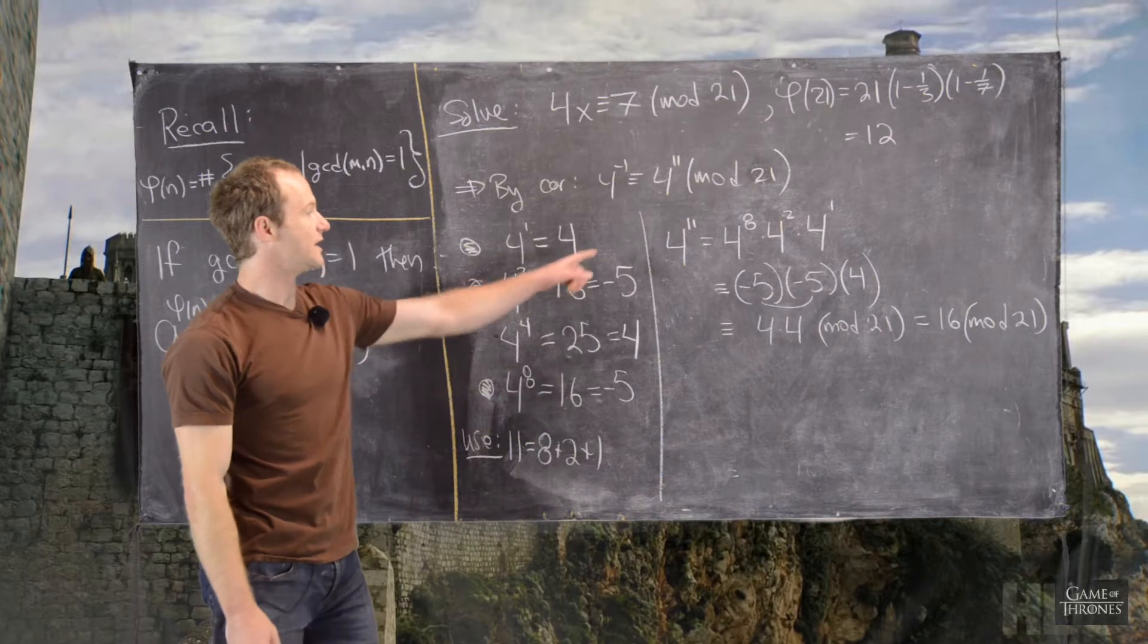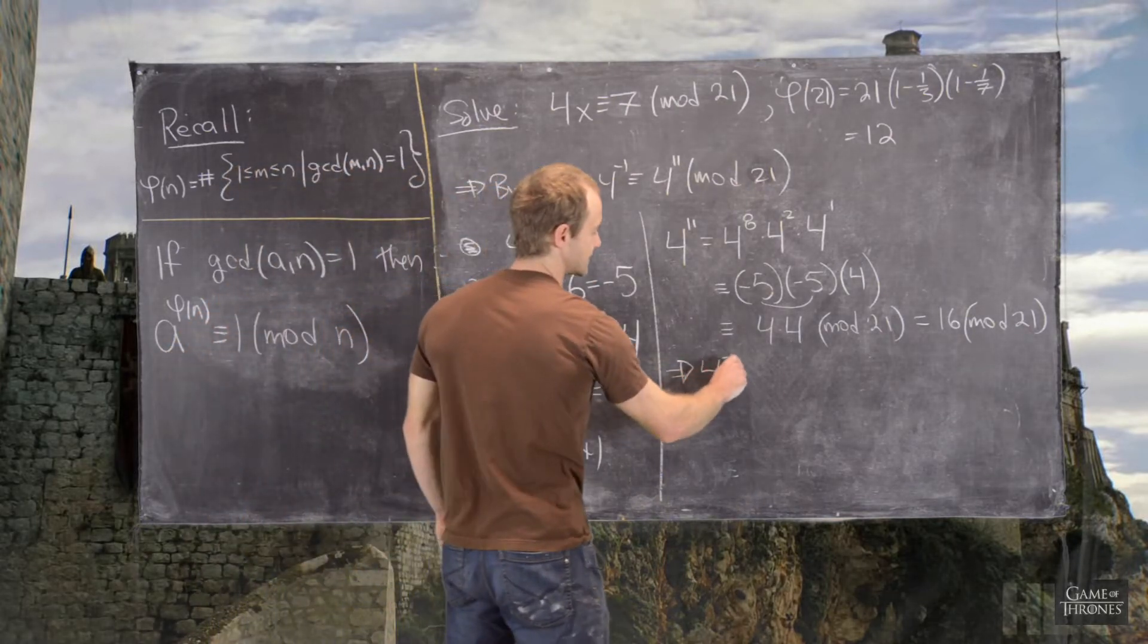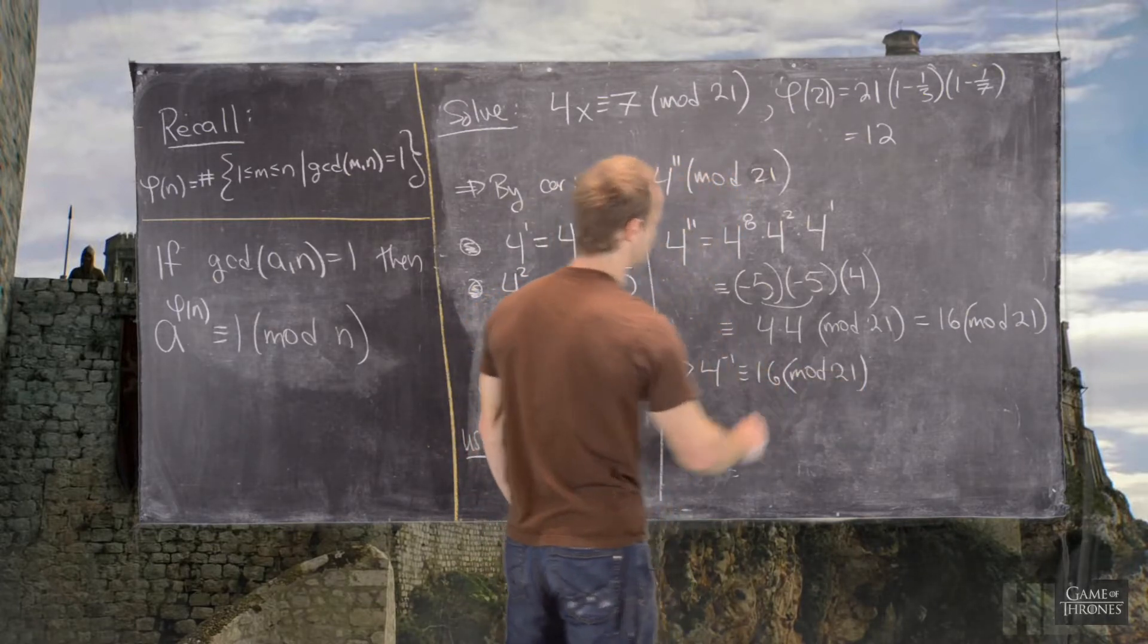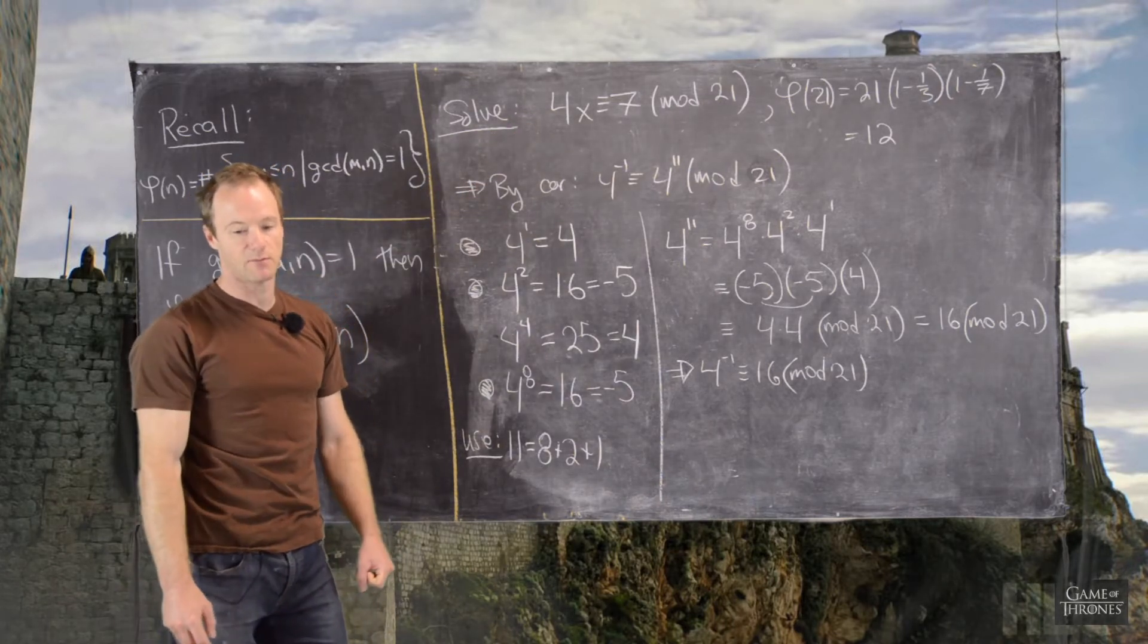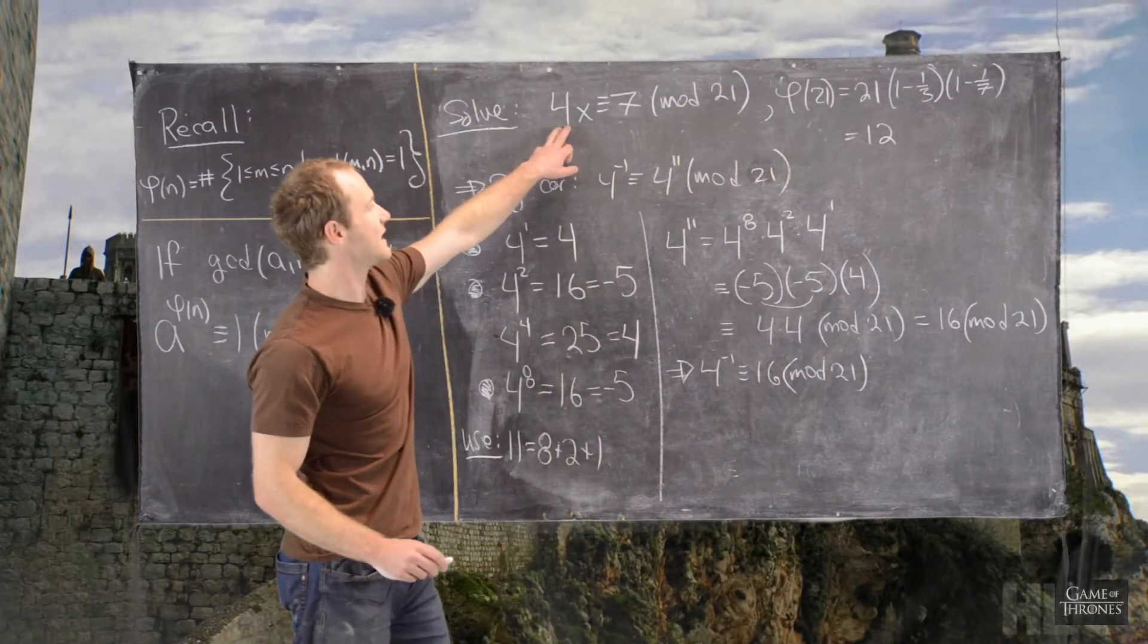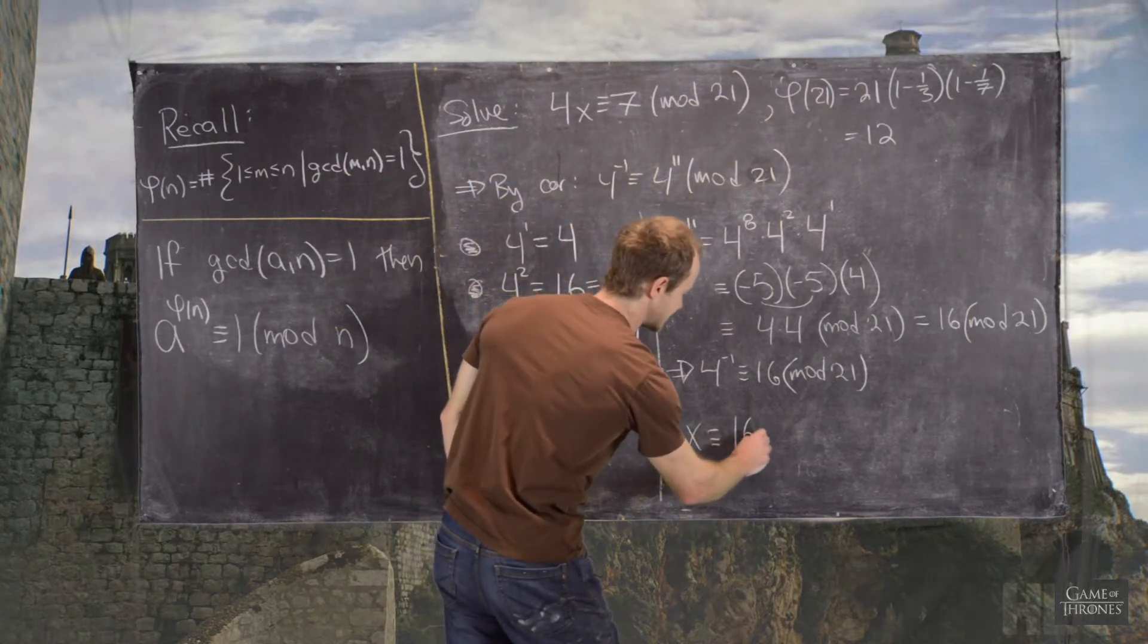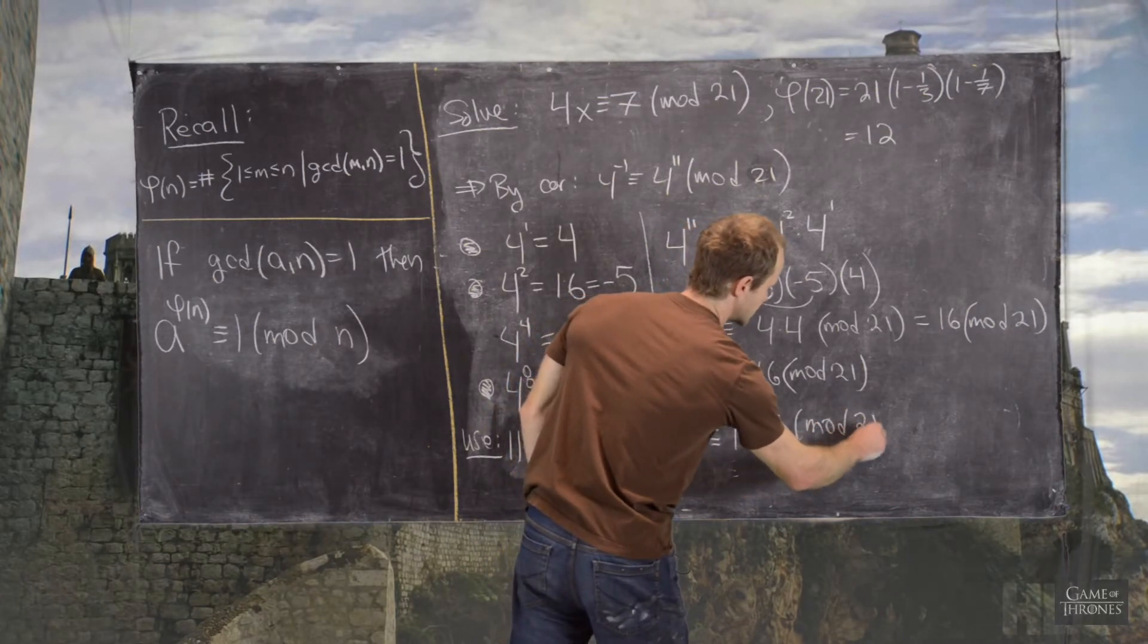Now, we know that that tells us that 4 inverse is congruent to 16 mod 21, which means we can take our original linear congruence and multiply it by 4 inverse. So, that means multiplying by 4 inverse on the left-hand side, we'll cancel the 4 and we'll get x is congruent to 16 times 7 mod 21.